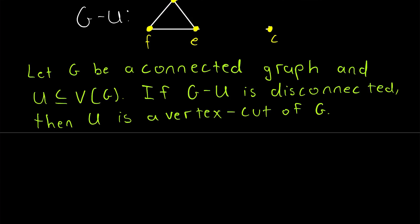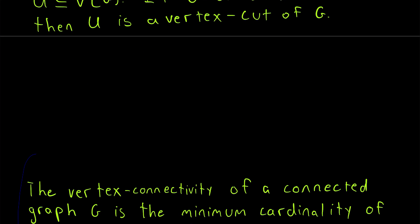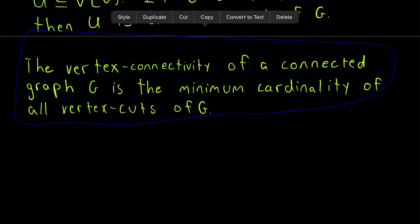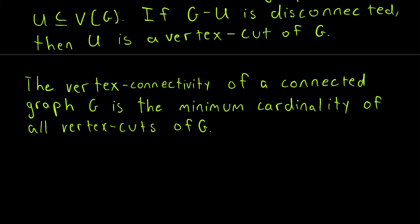Then, using vertex cuts, this is how we can characterize the connectivity of a graph. And this is just one way to do it, a way that uses vertices. The vertex connectivity, which is also sometimes just called the connectivity, of a connected graph G is the minimum cardinality of all vertex cuts of G.